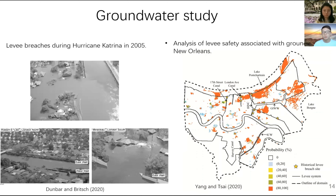In this groundwater study I evaluated levee safety associated with groundwater. As shown in the red map, the black lines represent the levee systems in New Orleans City. The red color represents areas with high risk of levee safety. In the north of the city, especially along the coastal lakes, levees have severe safety issues. In the middle part of the city, the meandering Mississippi River levee also shows high-risk areas. In the south, levees along navigation canals and waterways also have levee safety issues.